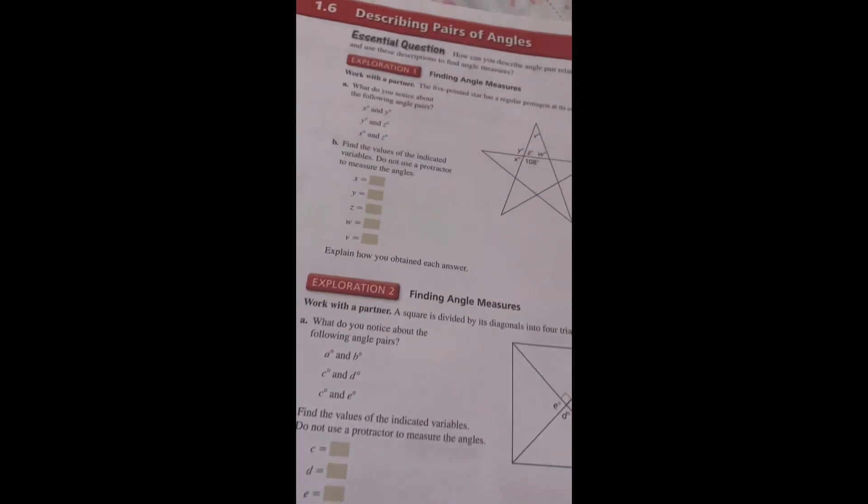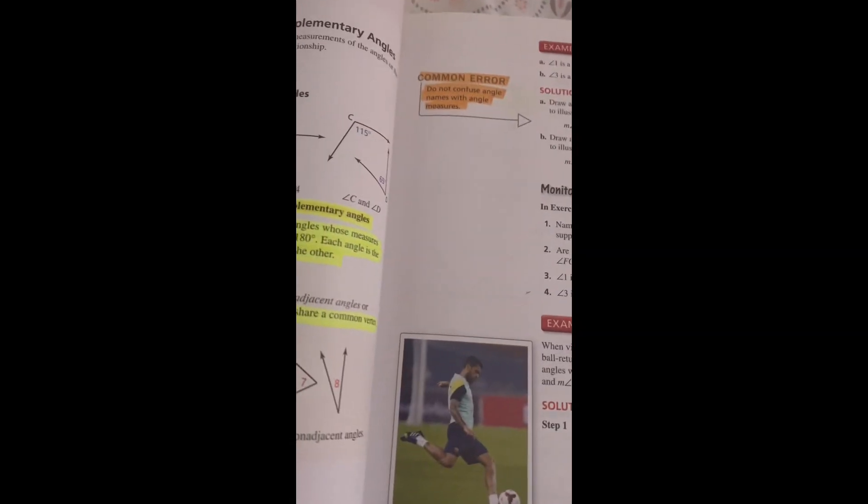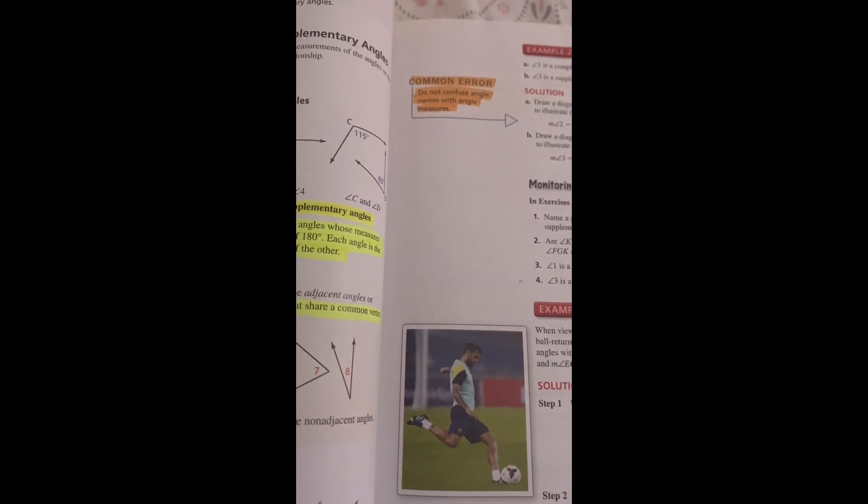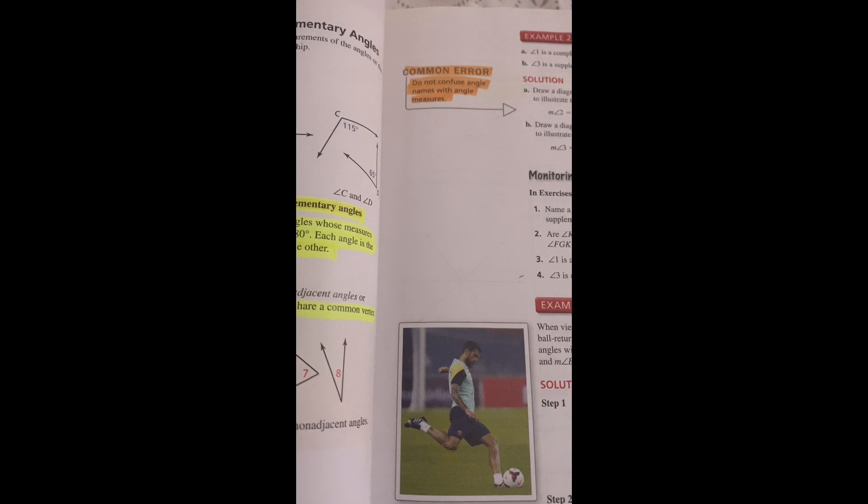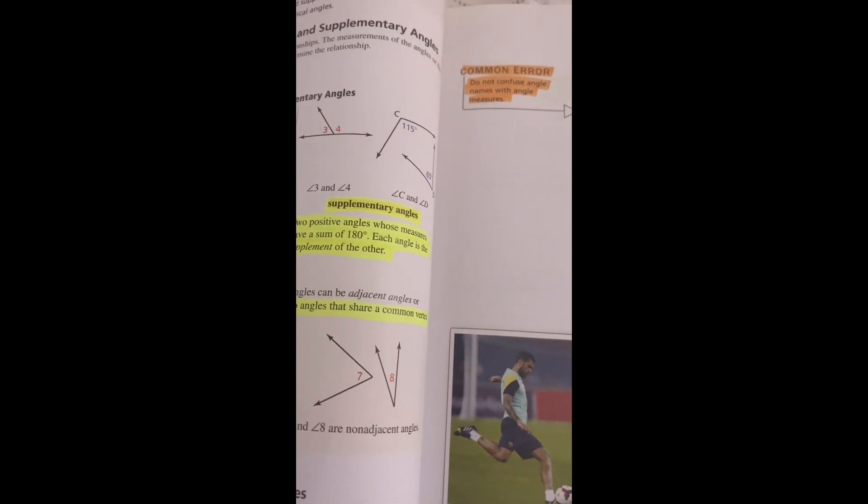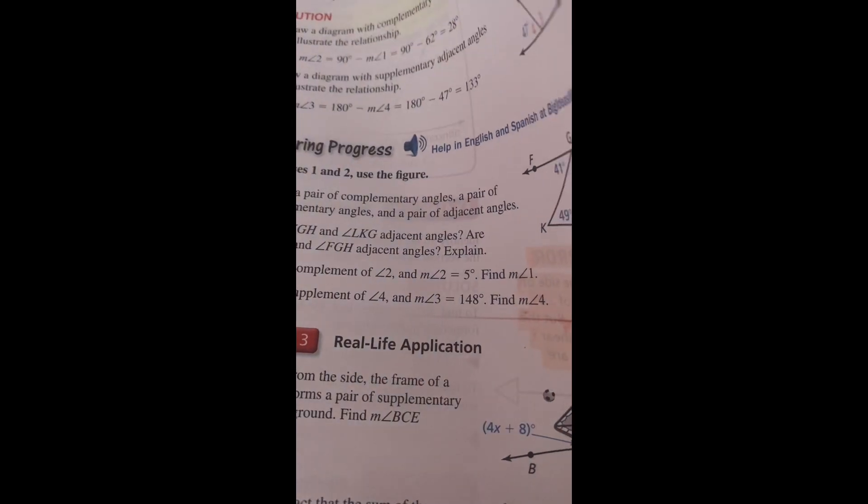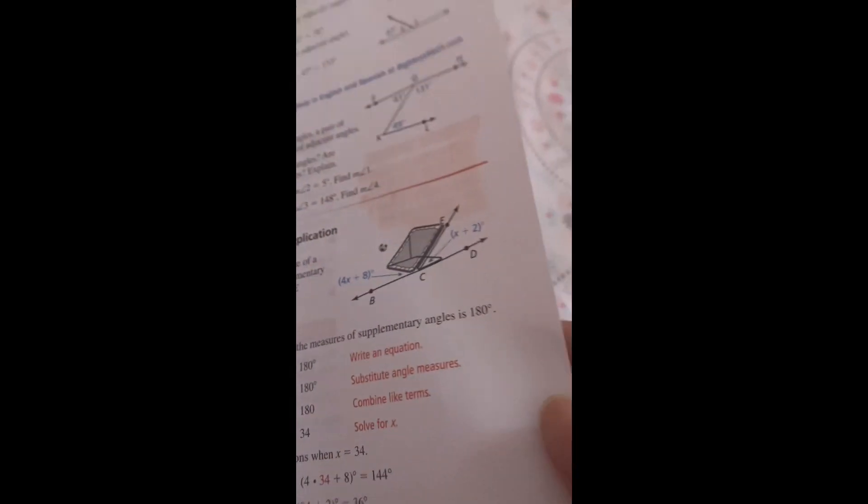1.6 Describing Pairs of Angles. Attending to Precision: To be proficient in math, you need to communicate precisely with others. Common Error: In example one, angle DAC and DAB share a common vertex and a common side, but they also share common interior points, so they are not adjacent angles. Common Error: Do not confuse angle names with angle measures.